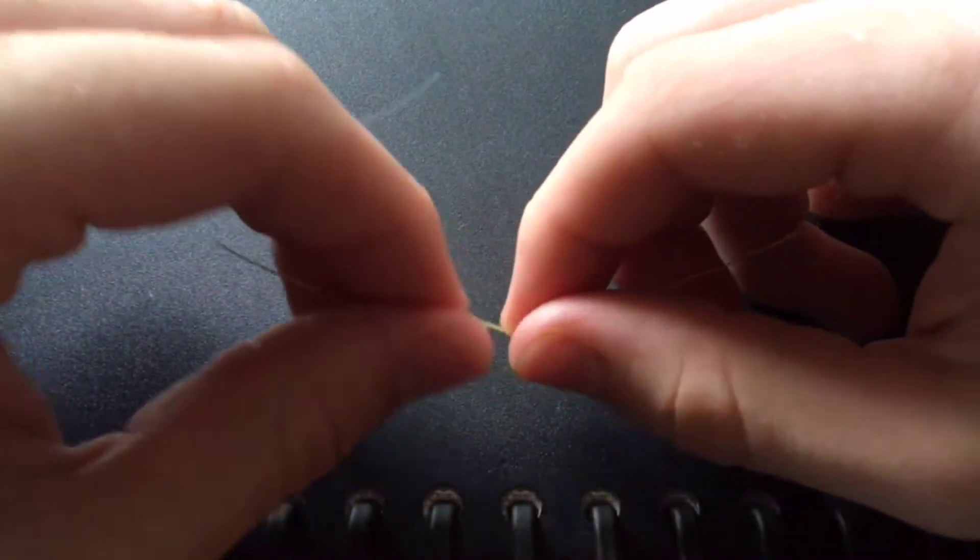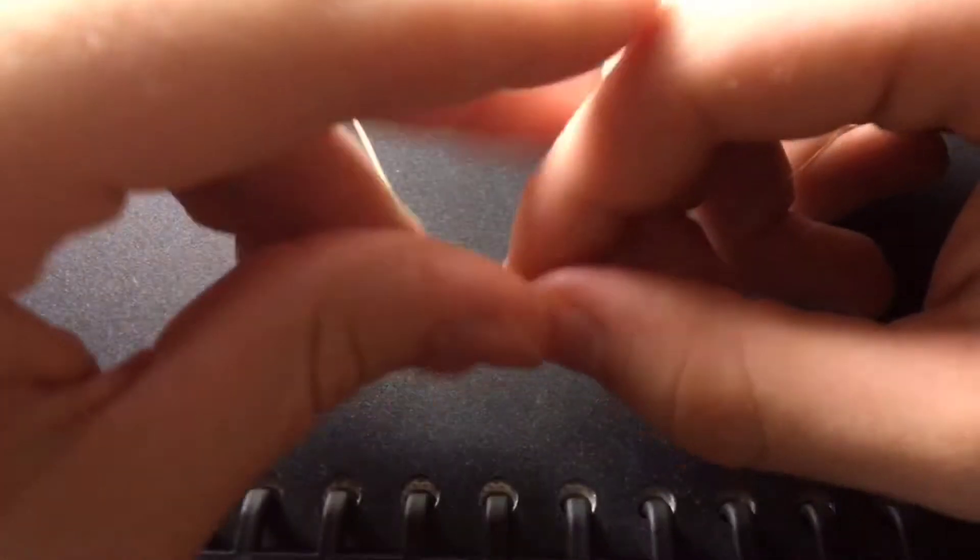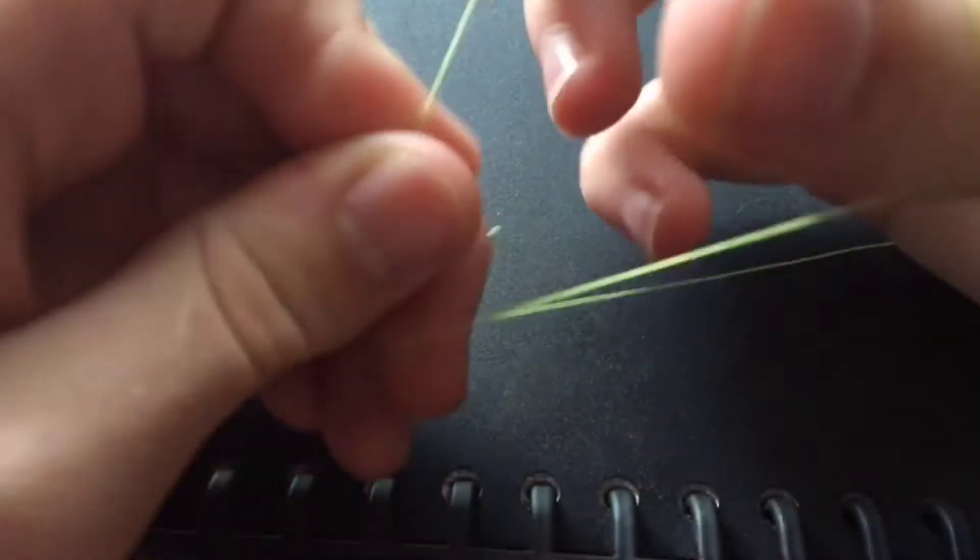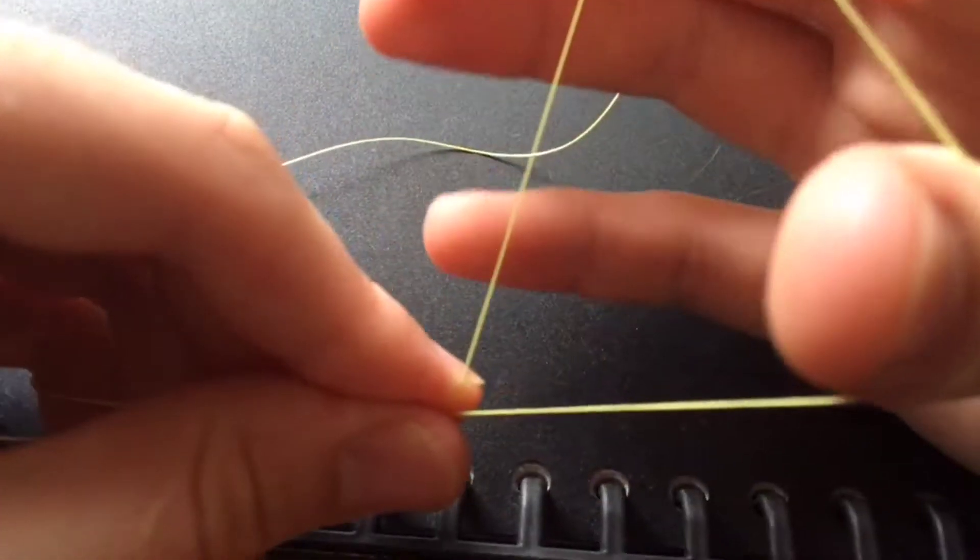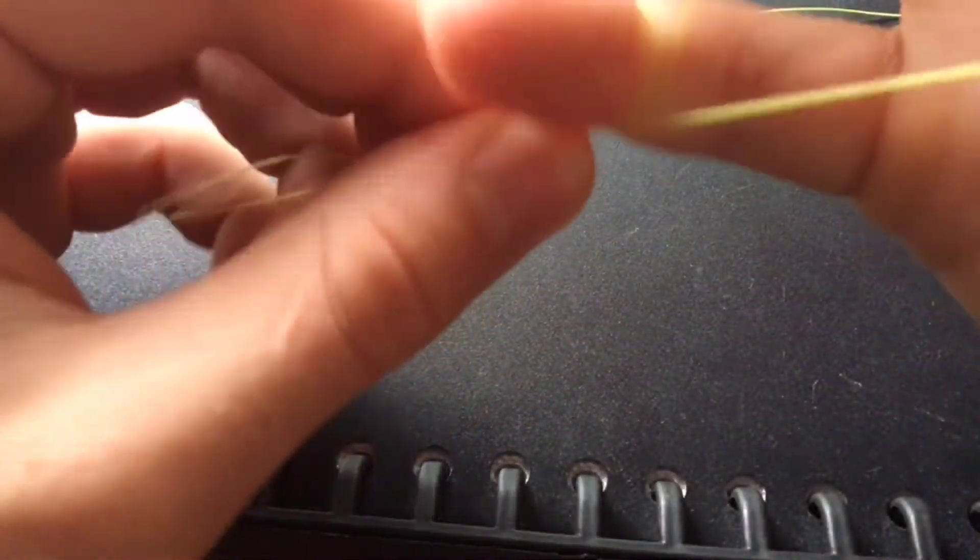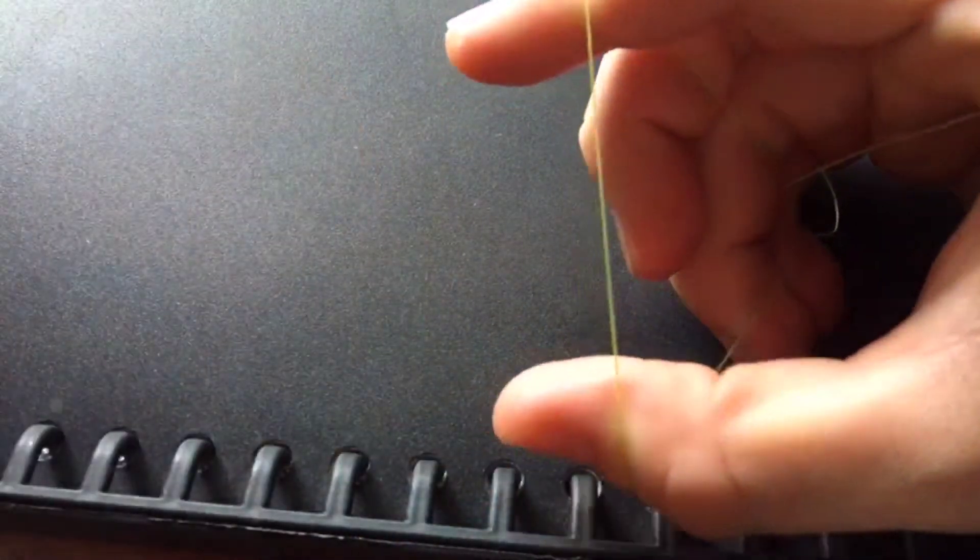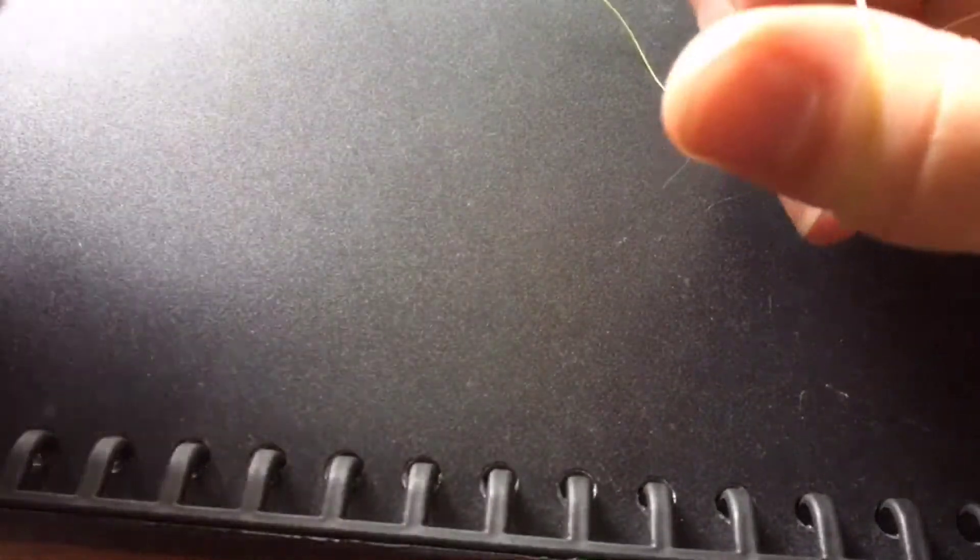First, grab your braid which will usually be on your reel. Make a big loop here. Then get the tag end and the line and wrap it around your pinky so you've got some tension. You want this to be nice and tight so you have control over it.